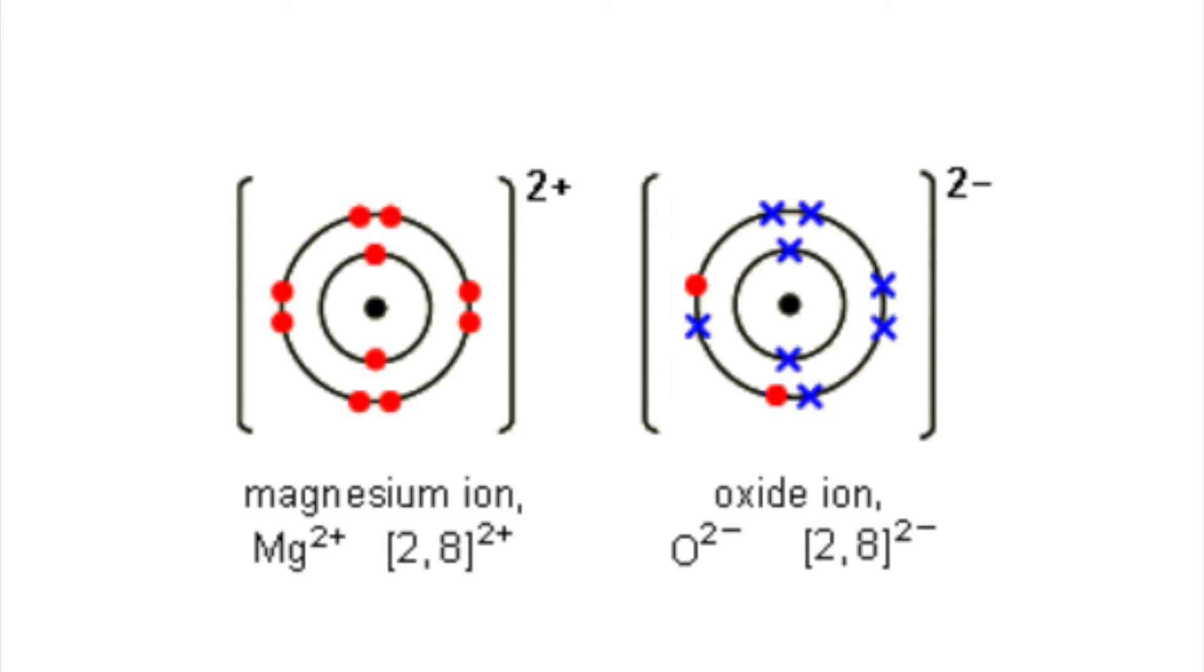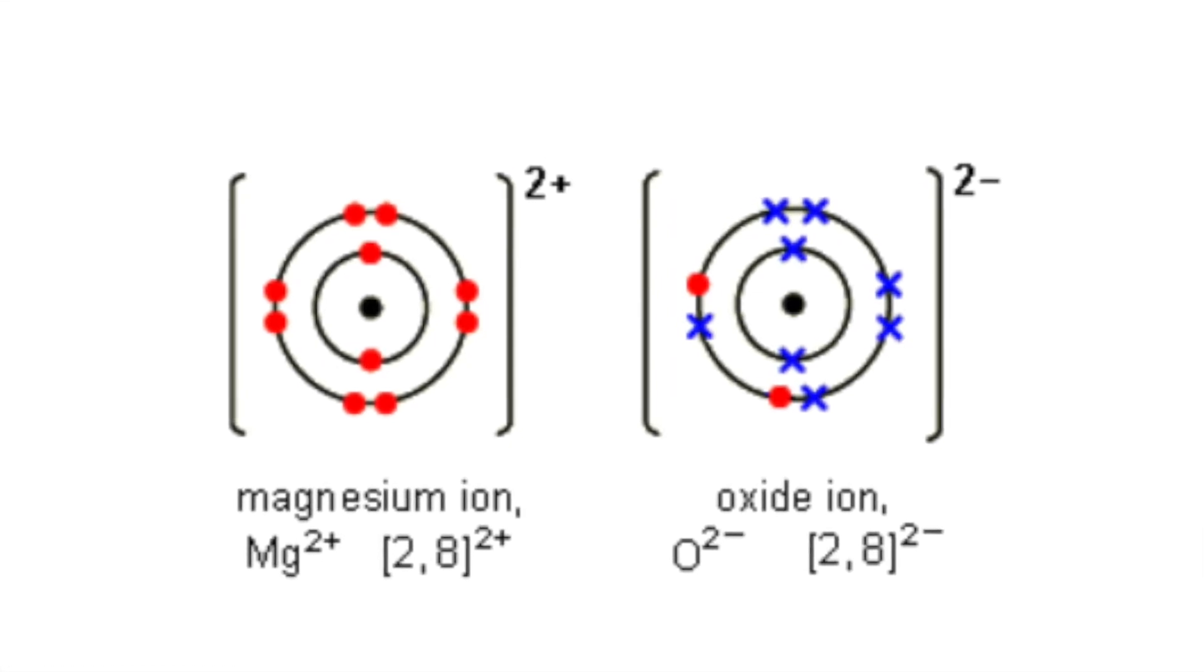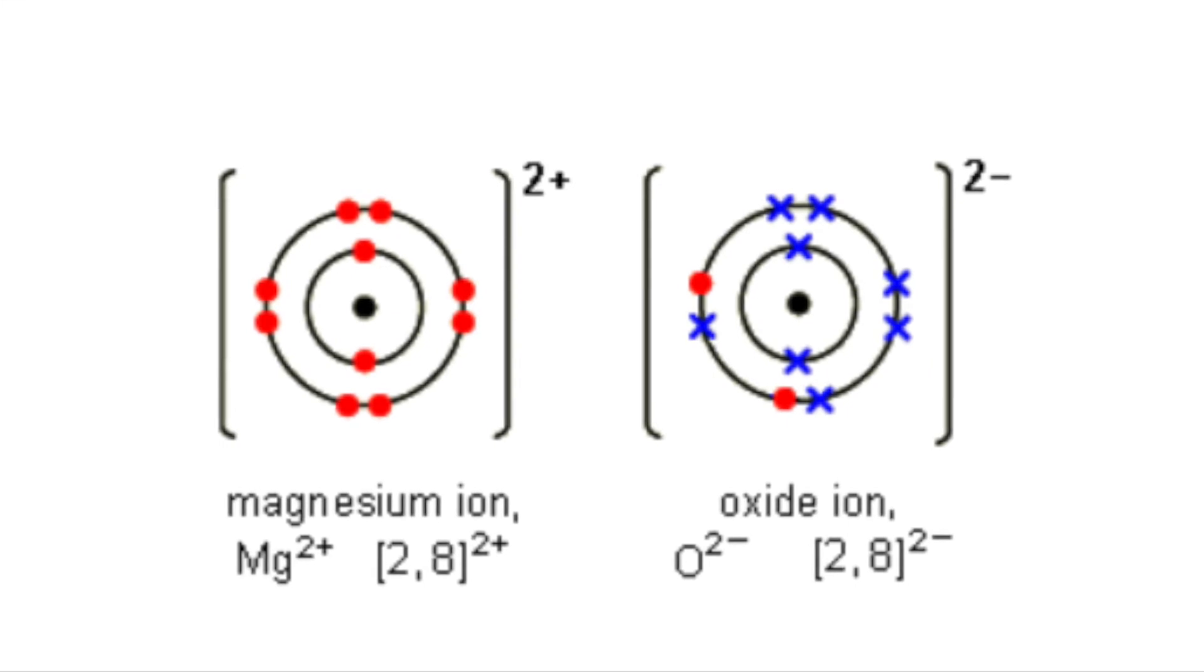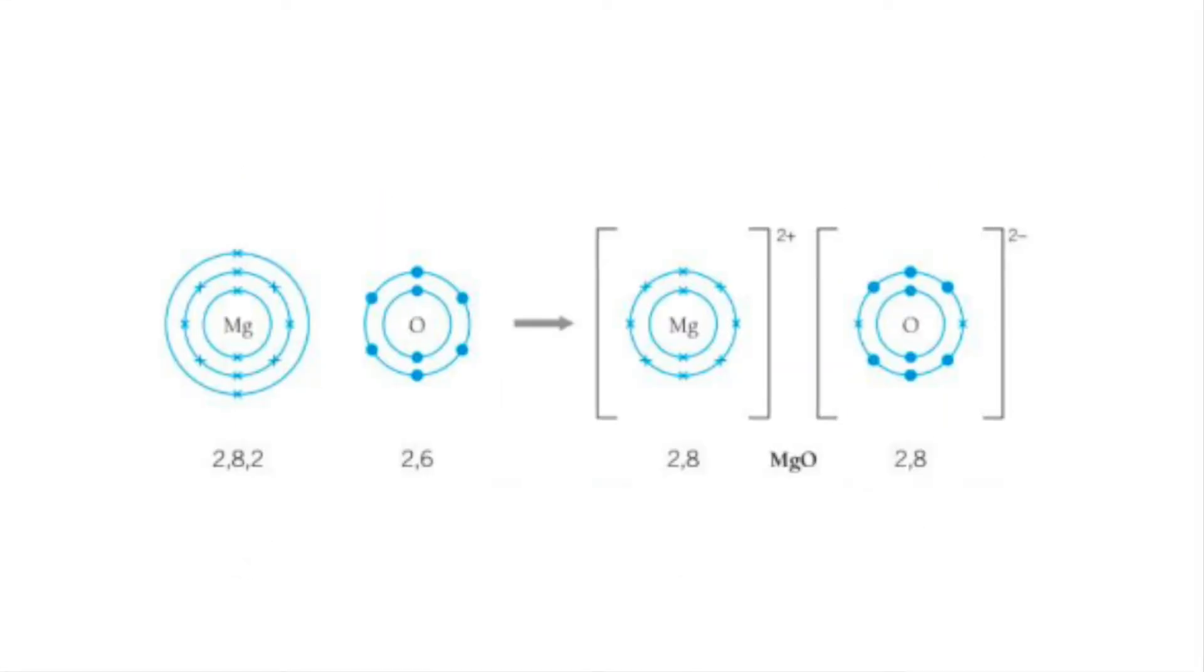This is made with magnesium ions with a double positive charge, Mg2+, and oxide ions with a double negative charge, O2-. And this can be seen on the screen right now.